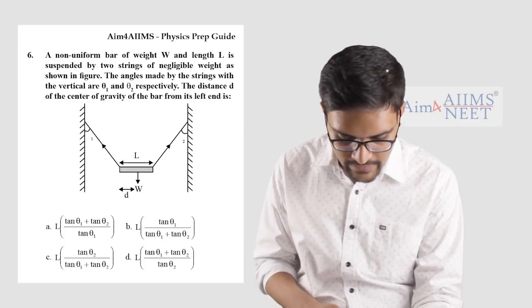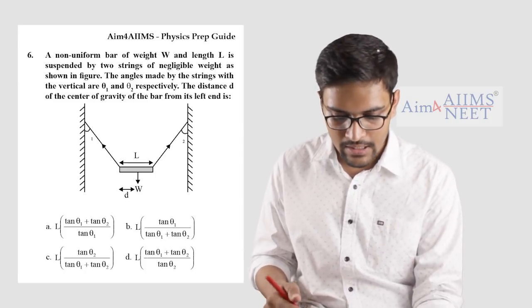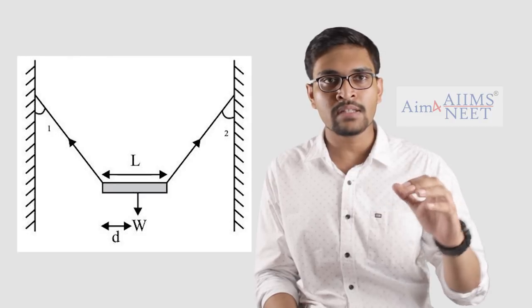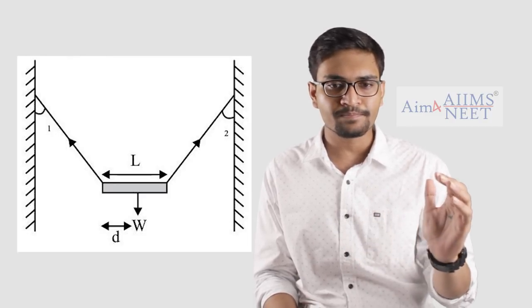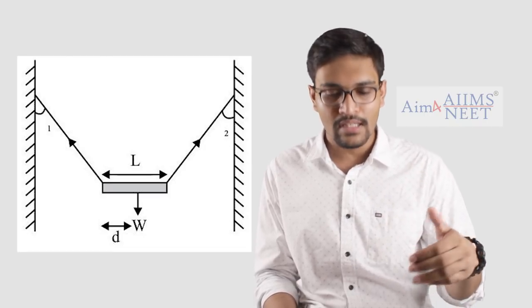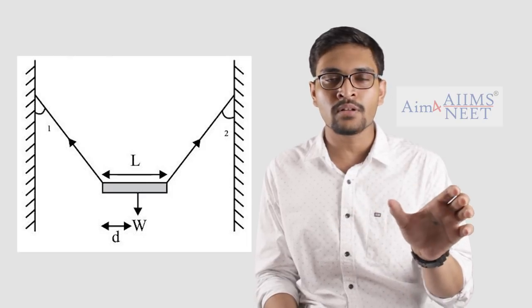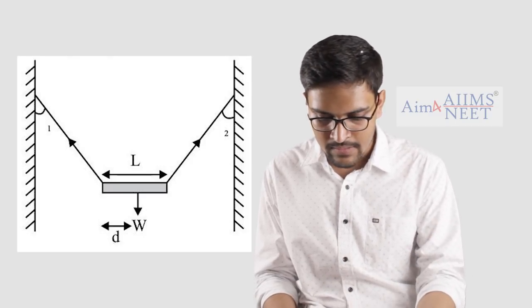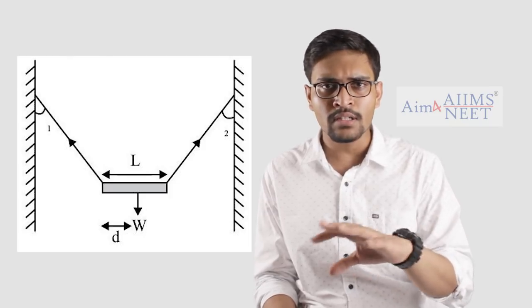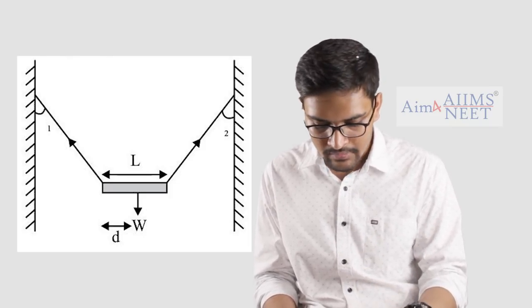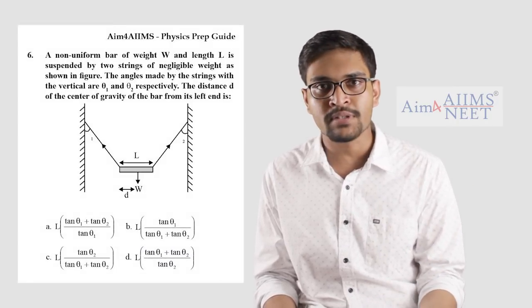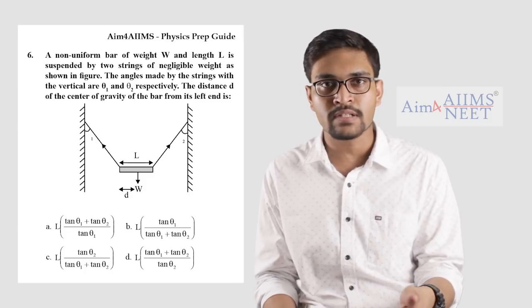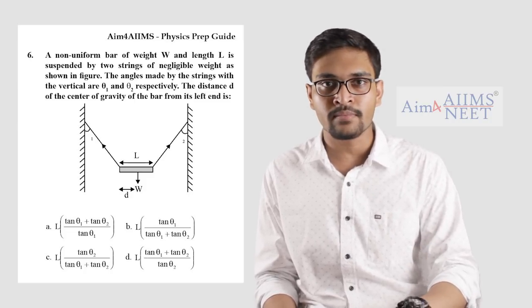Now consider what happens if you increase theta 1. Theta 1 is an angle, and if you increase theta 1 you can feel that the upward force is decreasing. This means that to balance the torque around the center of gravity, you have to increase the length from the center of gravity — so increasing theta 1 increases the distance from the left end to the center of gravity. Therefore the answer must have tan theta 1 in the numerator, directly proportional. But if you increase theta 1 you decrease theta 2, so the answer must be inversely proportional to theta 2, giving two candidate options: B and D.